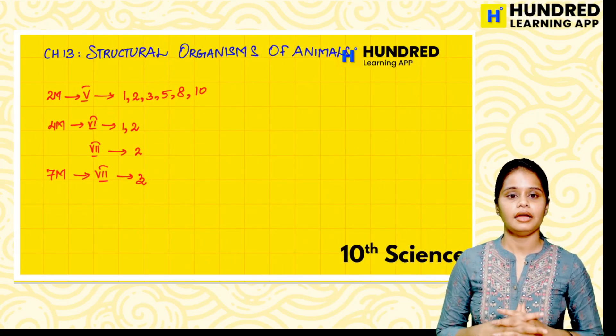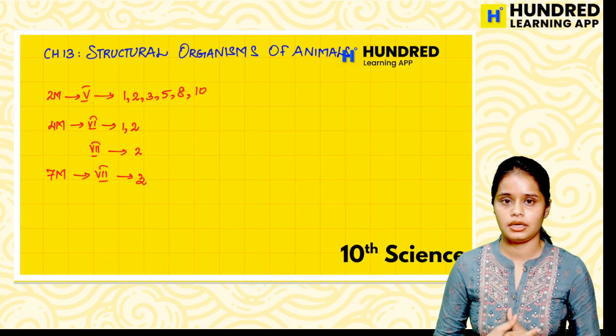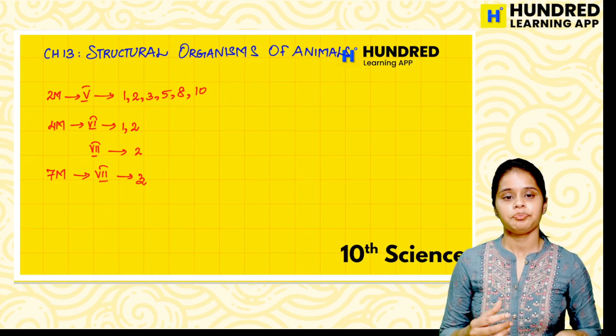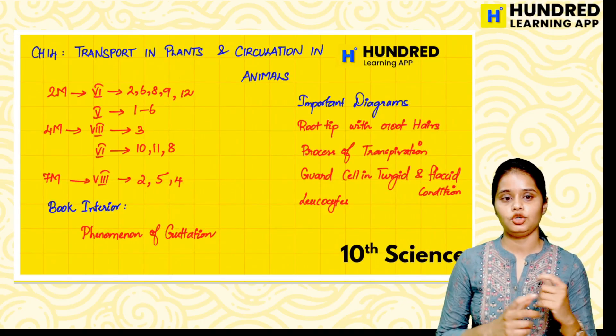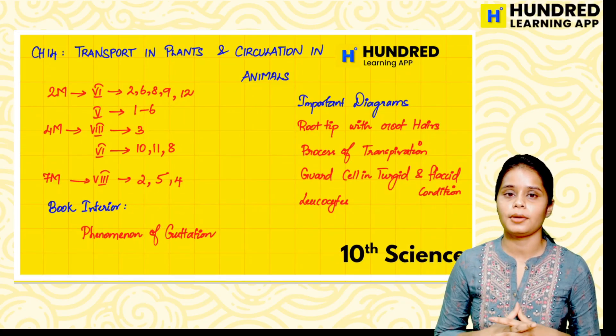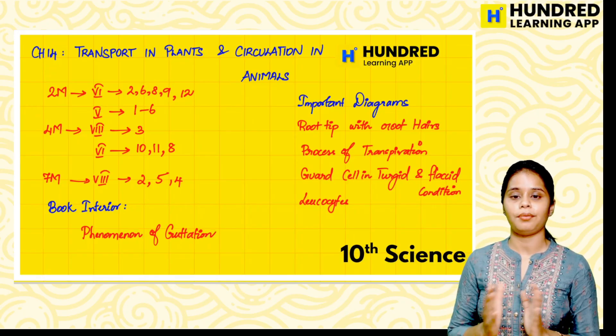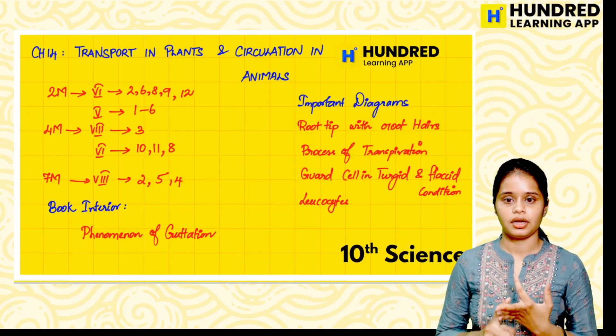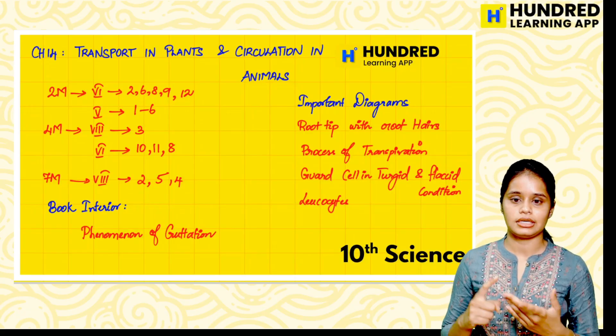In chapter 13 we have to learn about diagrams. So many diagrams in this chapter - you have to focus on time management. And in the 14th chapter there are two marks, four marks, seven and half marks. And book interior - let's learn about Phenomenon of Guttation, important diagrams Root tip, Process of Transpiration, Guard cell turgid and flaccid condition, Leukocytes.